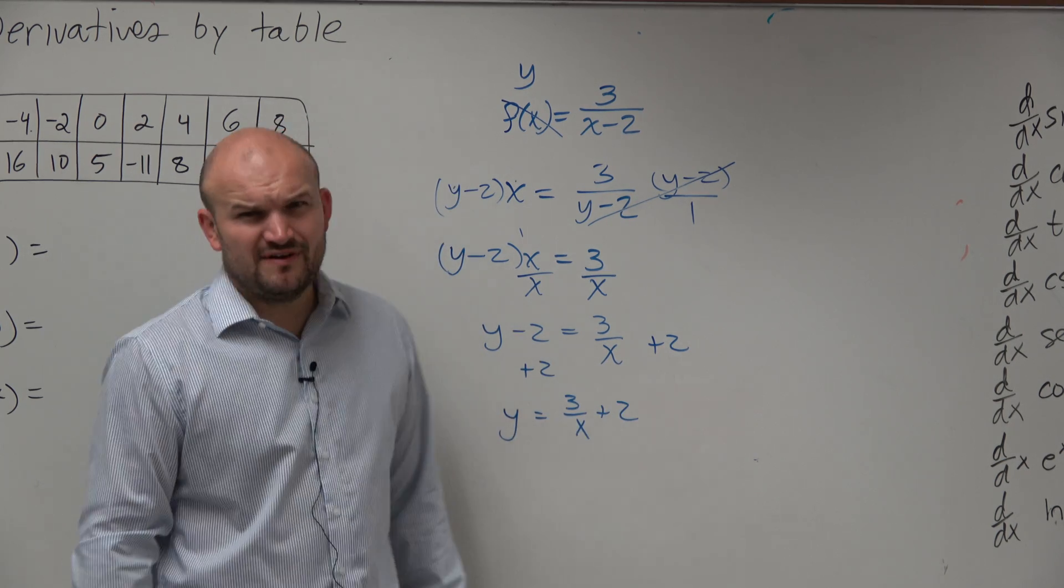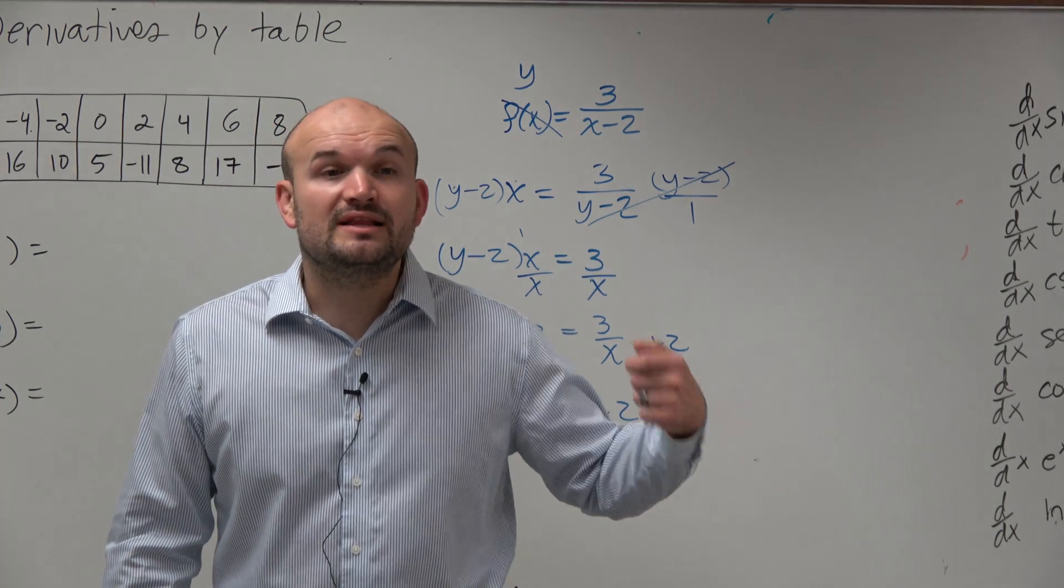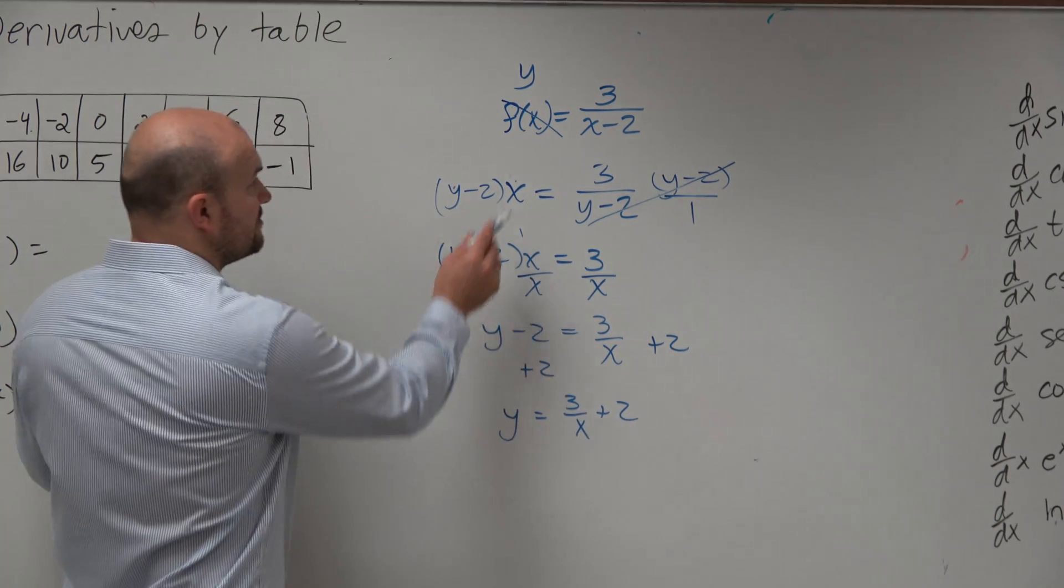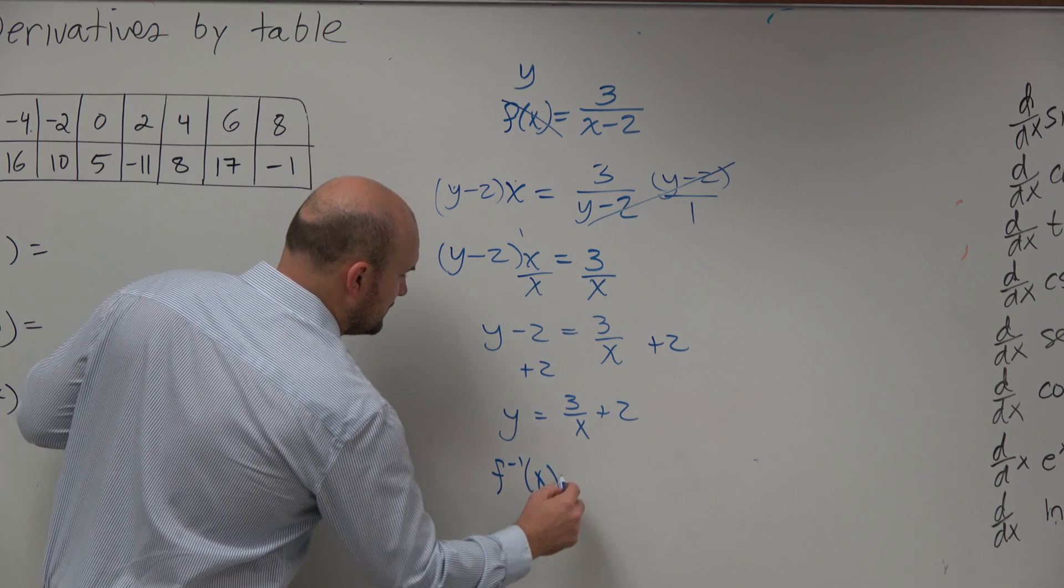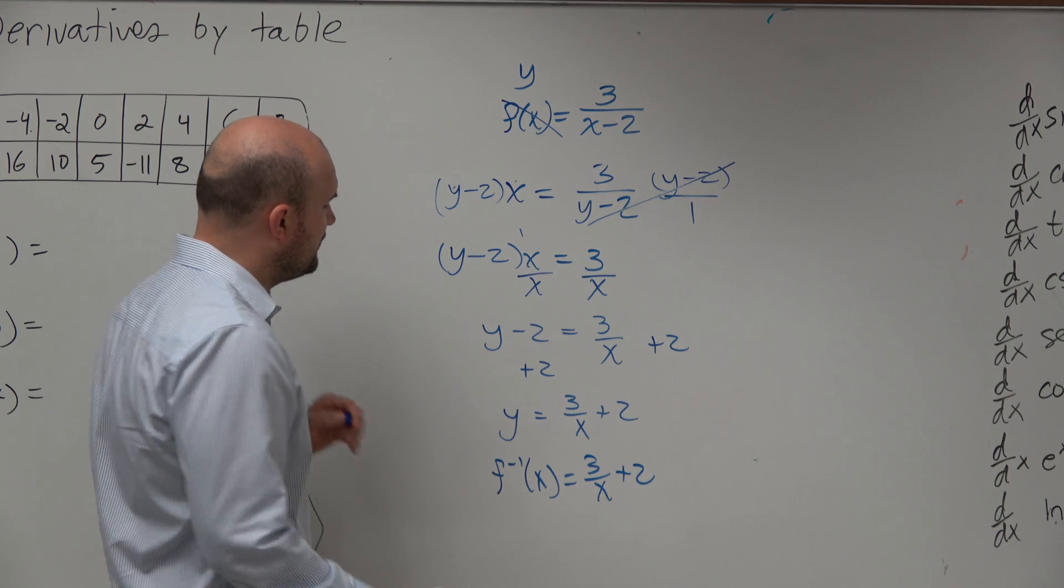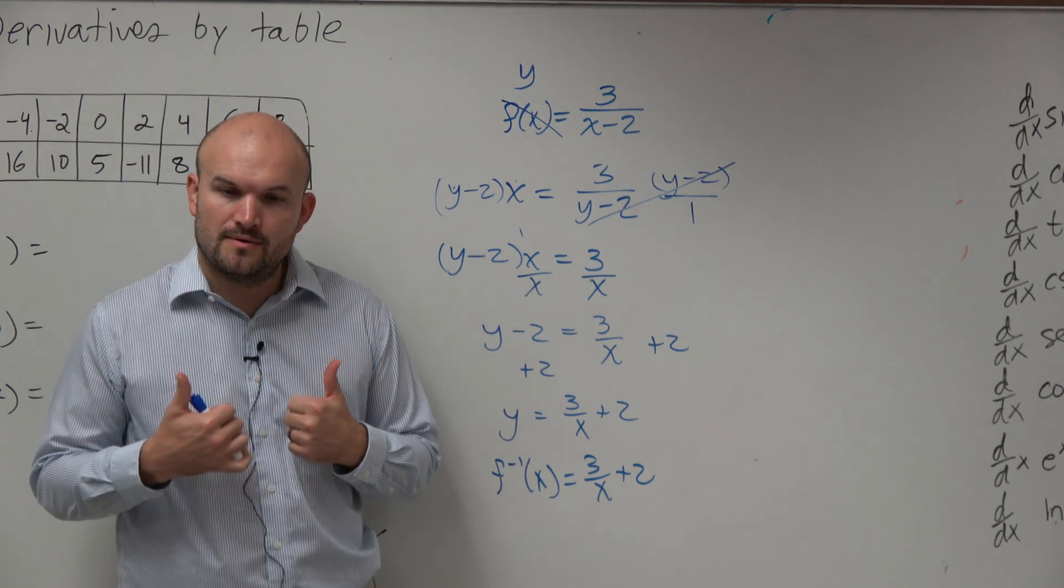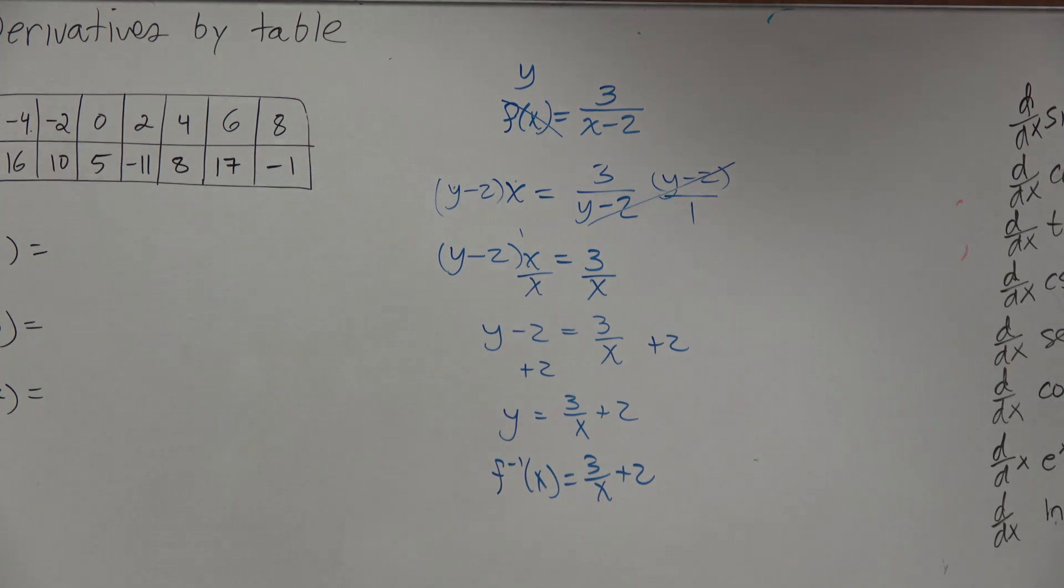But guys, are we finding what the equation is equal to y? No, we're actually finding the inverse. We're finding the inverse of the function, so we've got to make sure we're using correct inverse notation. And therefore, we have f inverse of x equals 3 over x plus 2. OK? All right. So, one last...